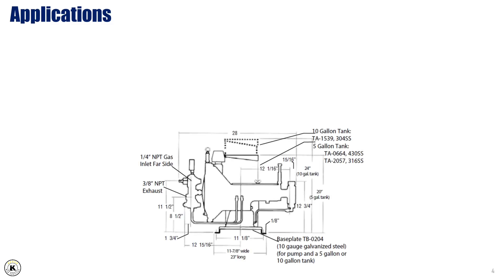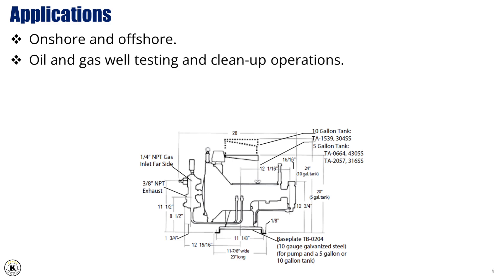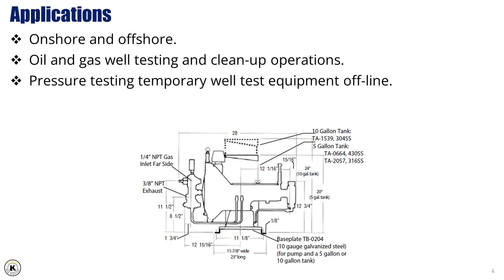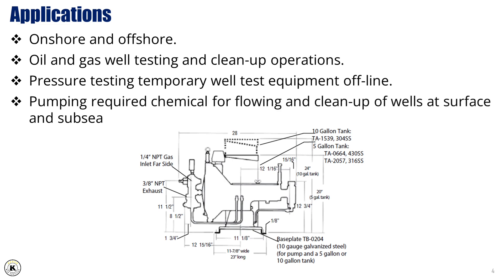Applications. The chemical injection pump is a versatile and essential tool in both onshore and offshore operations. It plays a critical role during oil and gas well testing and cleanup activities, where precise chemical dosing is required to ensure flow assurance and process efficiency. This pump can also be used for offline pressure testing of temporary well test equipment, verifying system integrity before actual use. Additionally, it serves an important purpose in pumping treatment chemicals to support well flow and cleanup, both at surface facilities and in subsea environments.